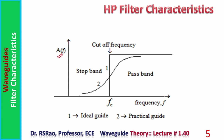The transfer characteristic graph shows frequency on one axis. Up to fc there is no transmission; after fc everything is transmitted without any problem. The changeover takes place at fc, indicated by a straight vertical line. However, this is the ideal situation — in practice it doesn't happen exactly like that.